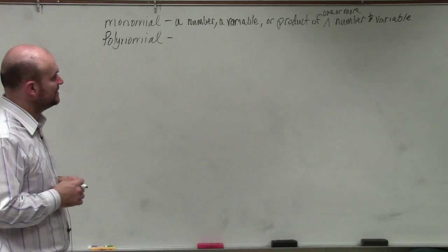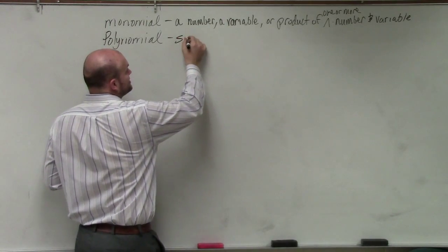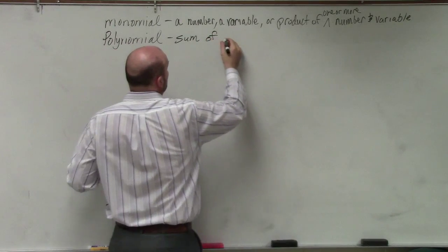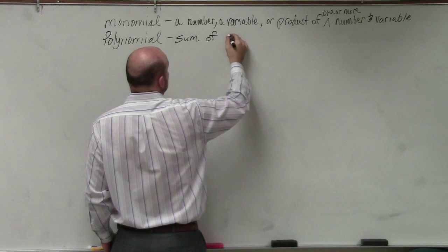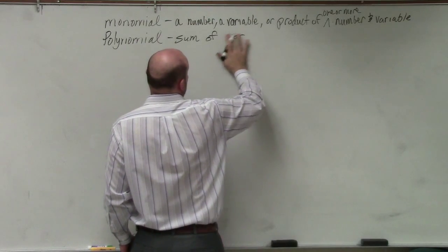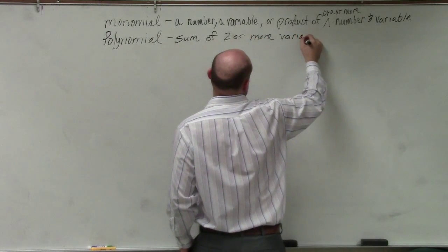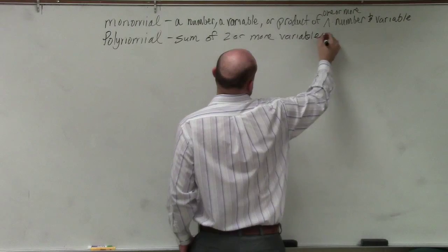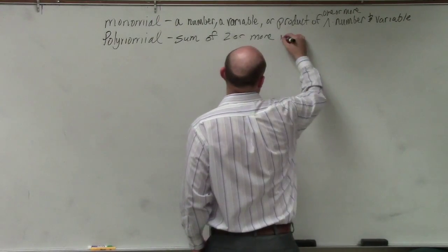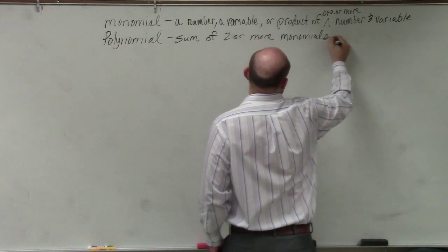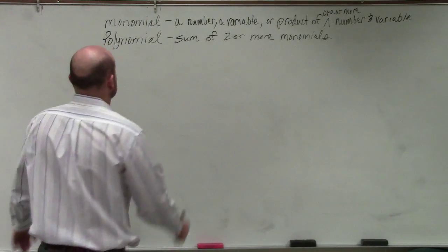We're just going to deal with one variable at a time. So a polynomial, in a very basic definition, is the sum of two or more monomials. And that's really it. So let's just go over some examples.